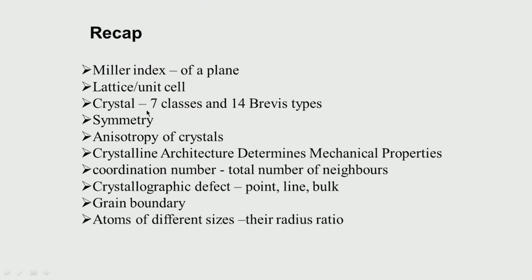We looked at the 7 classes of unit cells based on the 3 sides A, B, C and based on the 3 angles alpha, beta, gamma. Then we looked at symmetry — there are different types of symmetry: translational symmetry, rotational symmetry, mirror symmetry and so on. Why do we have to do all this? Because there is an anisotropy of crystals — the direction in which the load is acting determines the number of atoms involved, which affects the mechanical properties.